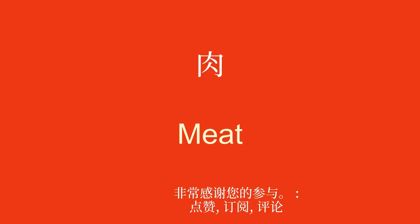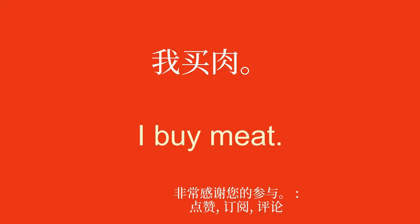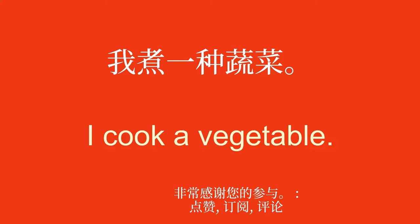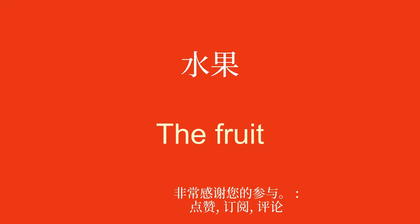肉。meat。我买肉。I buy meat. 蔬菜。a vegetable. 我煮一种蔬菜。I cook a vegetable. 水果。the fruit. 我剥水果。I peel the fruit.